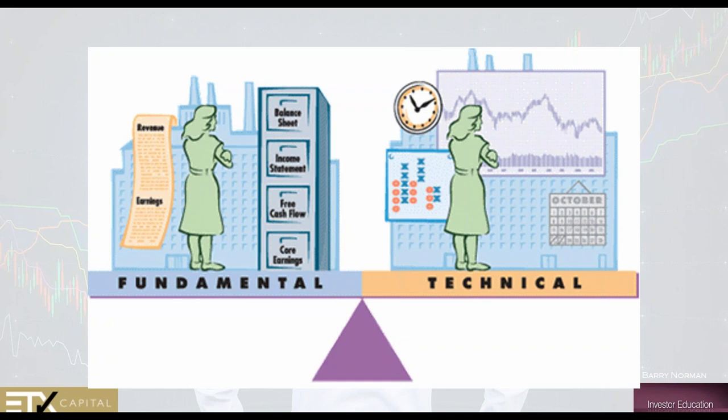Fundamental analysis is often easier for many people to trade with because we already kind of understand this stuff. We understand what OPEC says about crude oil production. We understand when there's global strife that gold's going to go up. We read the headlines and can understand these things. For example, if Apple comes out and says they missed their earnings report, you expect Apple to fall.